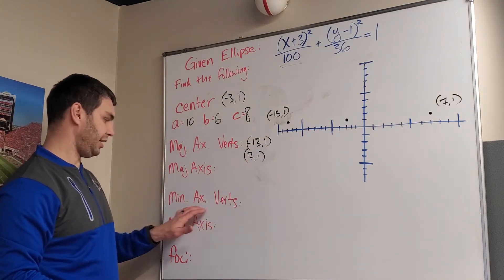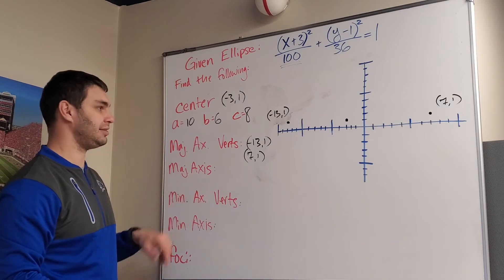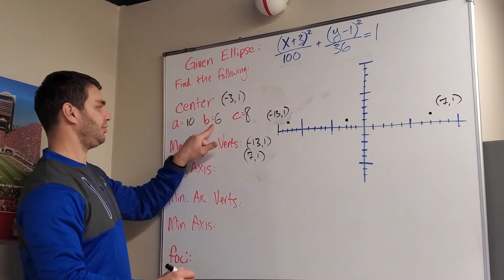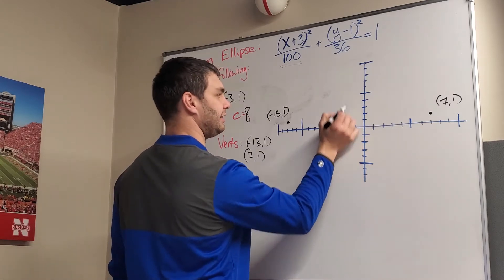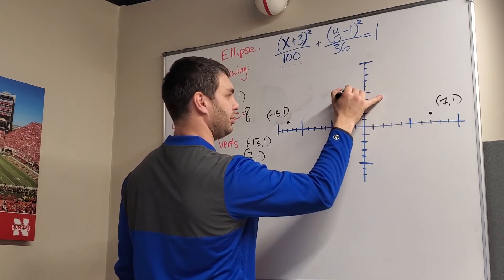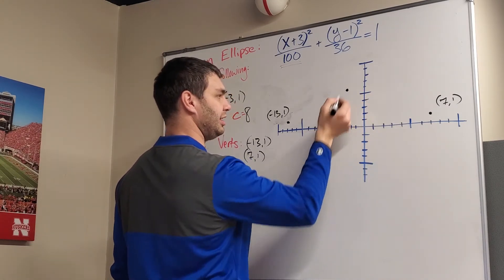Okay, for my minor axis vertices, we'll get to our major axis here in a second, but for my minor axis vertices, I have to go up 6 and down 6 in each direction from my center. So if I add 6 here, now all of a sudden I'm at the point (-3, 6).